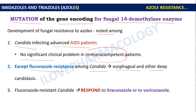In case of fluconazole-resistant candidal infection, this type of resistant Candida will respond to itraconazole or voriconazole, which are triazoles.